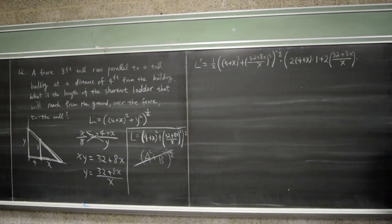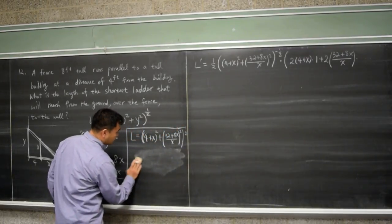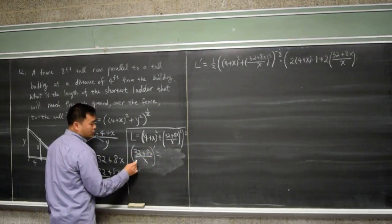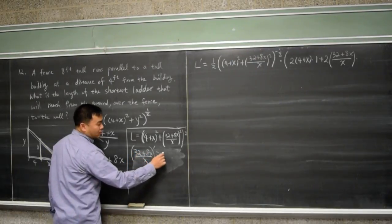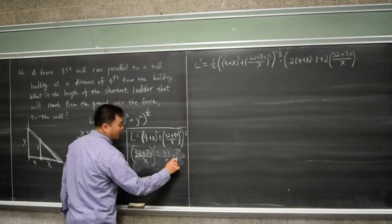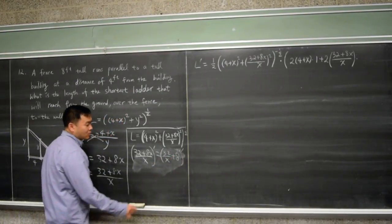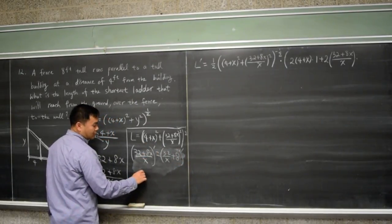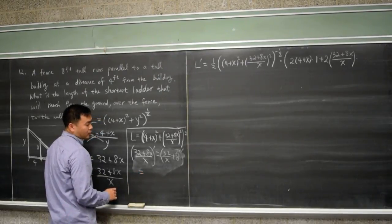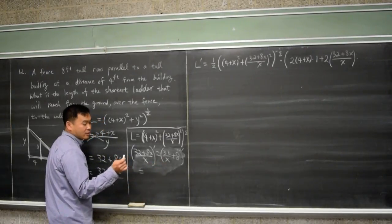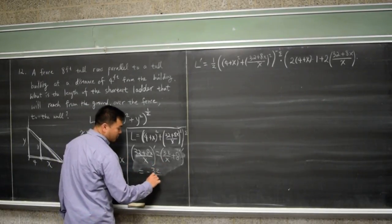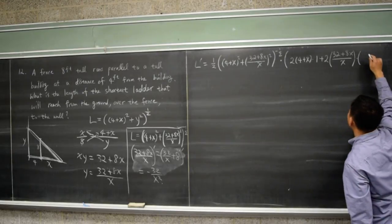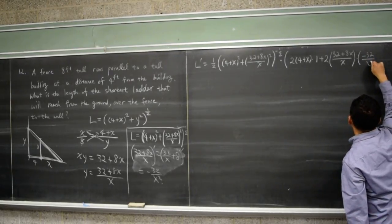Let's differentiate (32 + 8x)/x. You can split this fraction into 32/x + 8, and the derivative of that is easier: the 8 disappears, and d/dx[32/x] = d/dx[32x^(−1)] = −32/x². So the derivative of (32 + 8x)/x is −32/x².